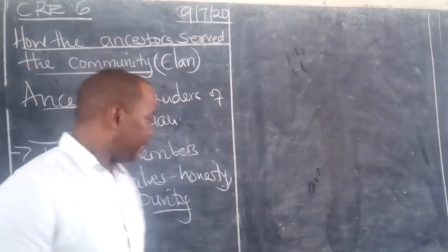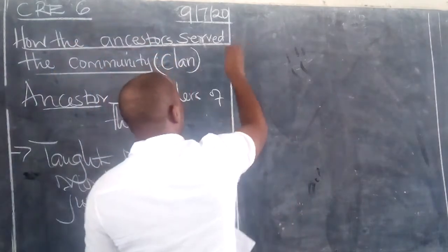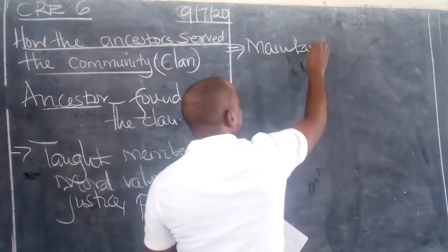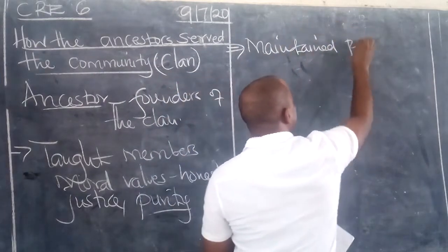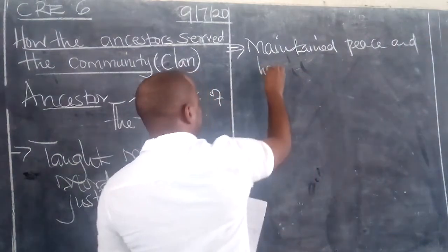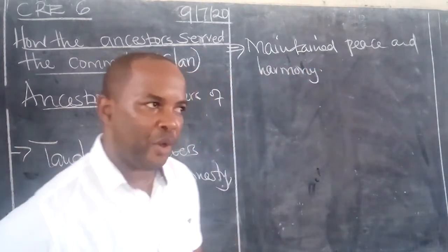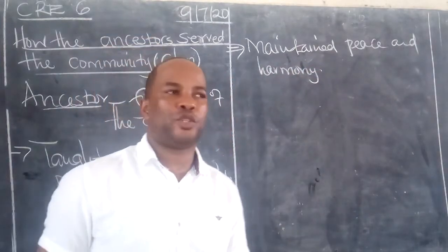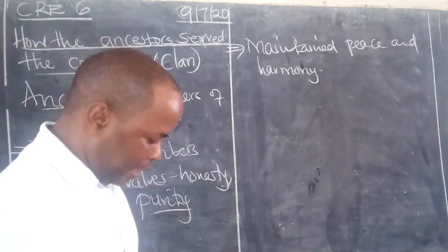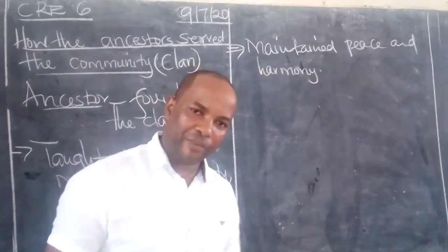Another thing that the ancestors did was maintain peace — number two — they maintained peace and harmony. Peace and harmony are very important for any society to progress and have a positive impact. Without peace, there is no development.